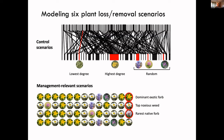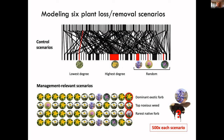We also modeled three management-relevant scenarios: removing the dominant exotic forb, removing the top noxious weed — which in North America is legally required to be removed — and modeling the loss of the rarest native forb in a system, representing stochastic potential losses. In each case, we looked at how removal affects the insects involved and how that carries on to further affect plants. Each scenario was simulated 500 times.